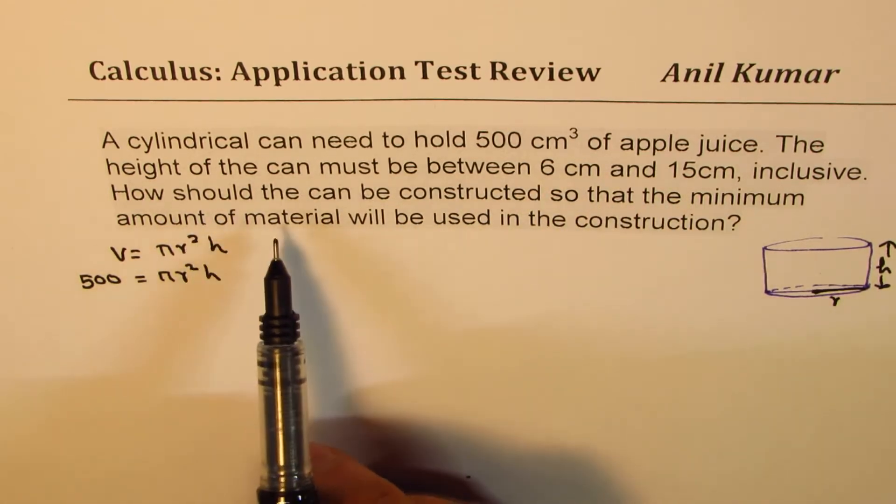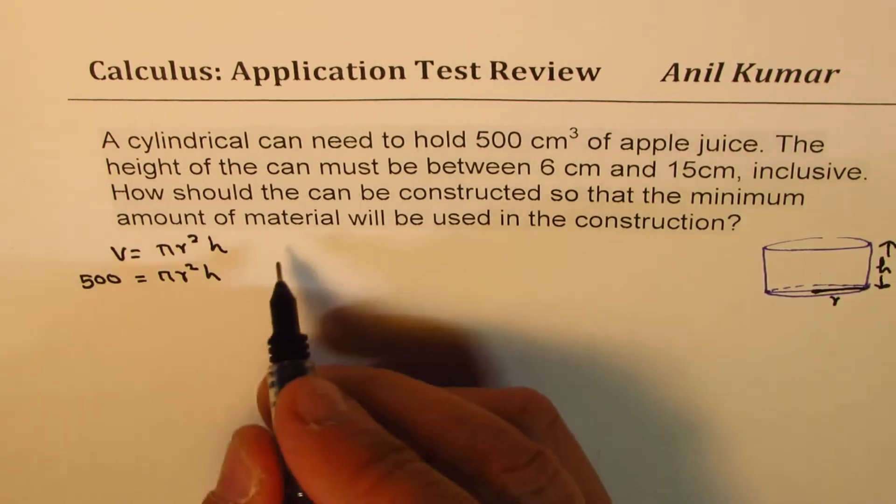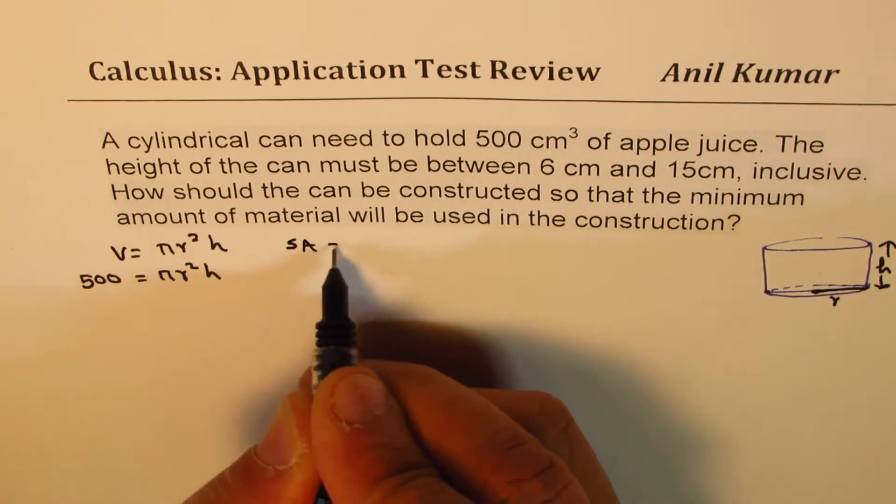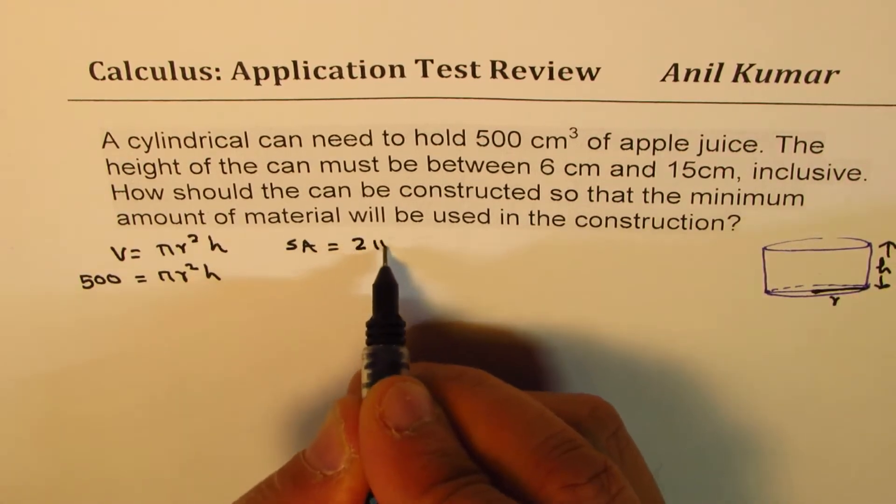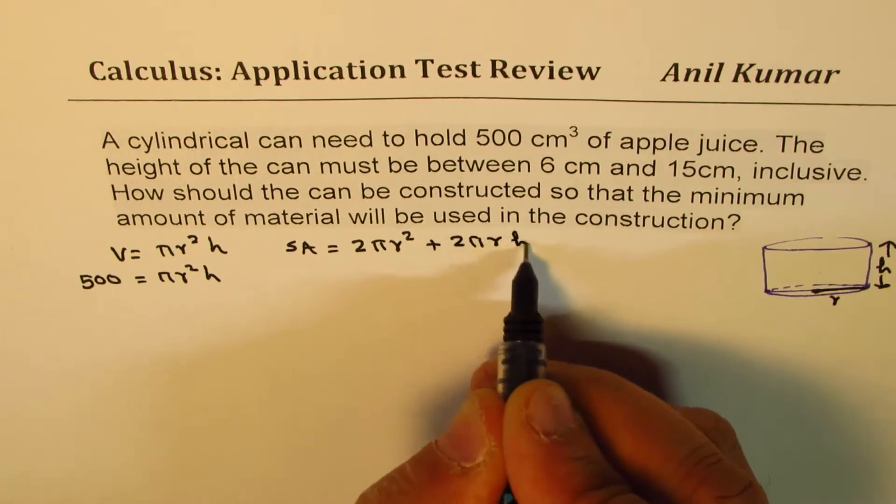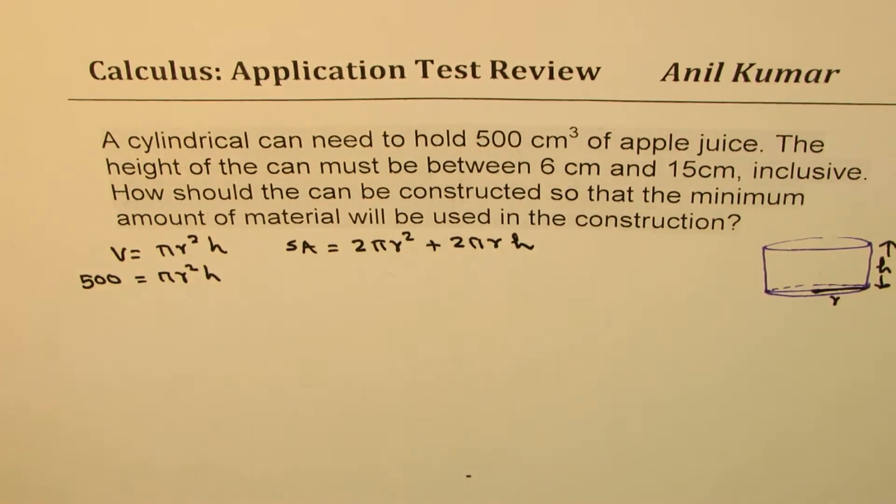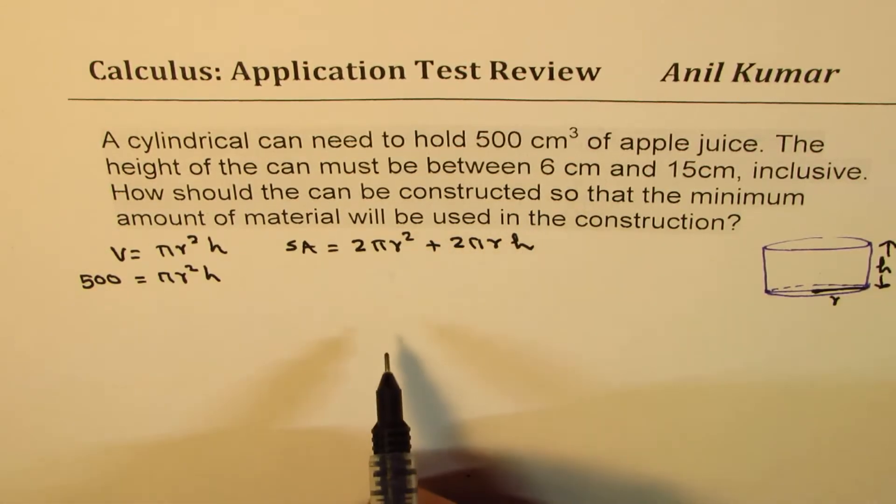Now the question here is to minimize the construction cost, that is surface area. So let us see what is the formula for surface area. Two surfaces are circular, so we have 2πr². And the lateral surface is 2πrh. Now we need this surface area in one variable to really solve the question.